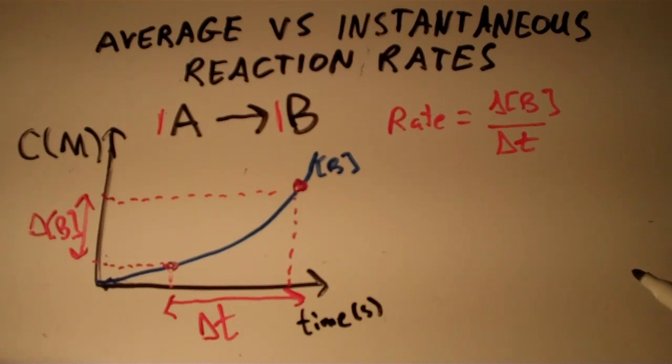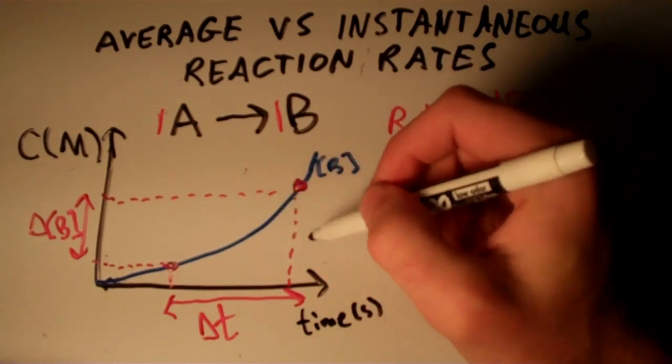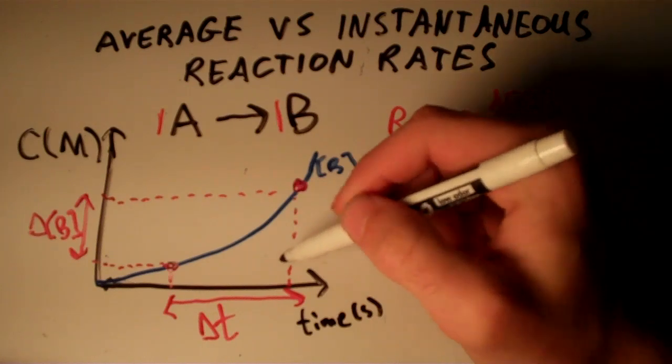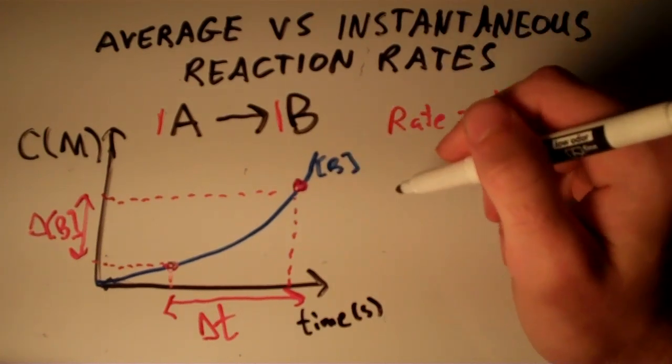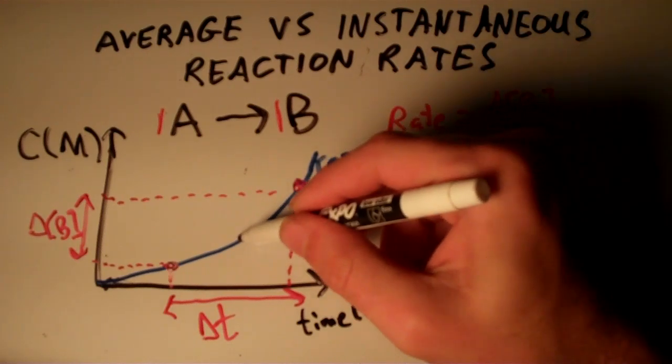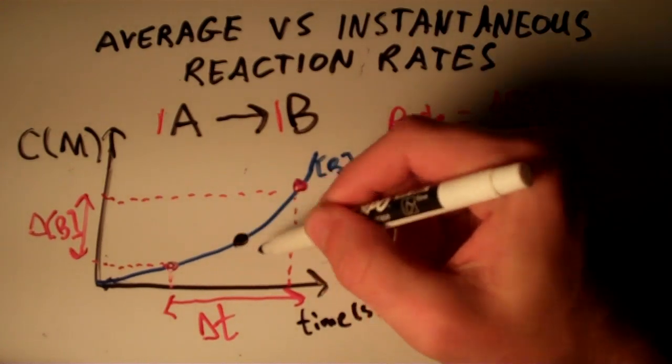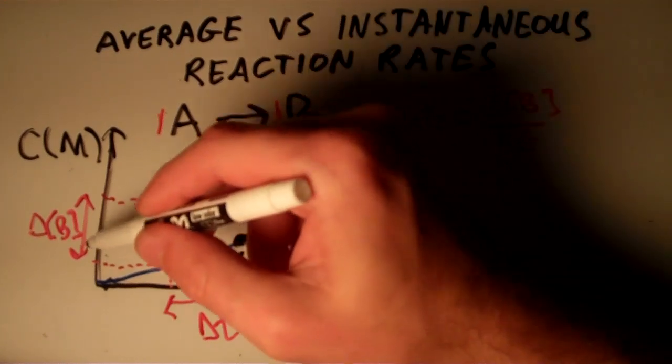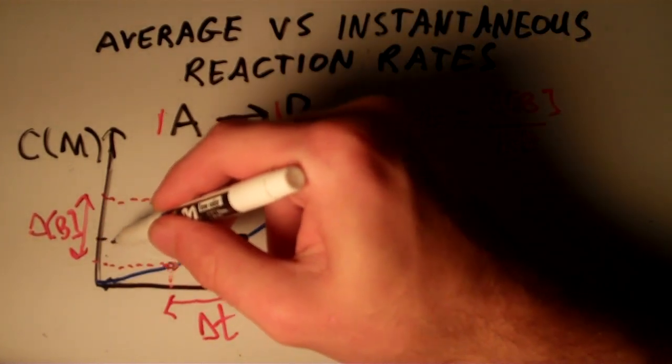Now suppose that instead of choosing two points to define our reaction rate, suppose I want to find the reaction rate at this instant right here, at this time and at this concentration.